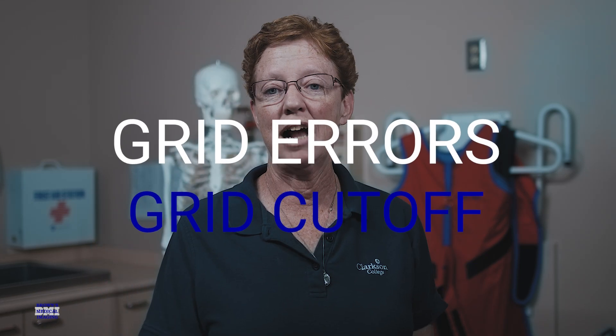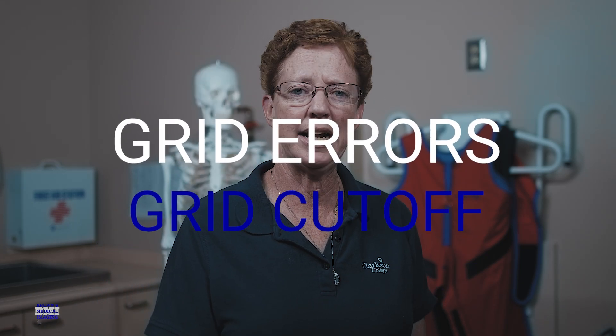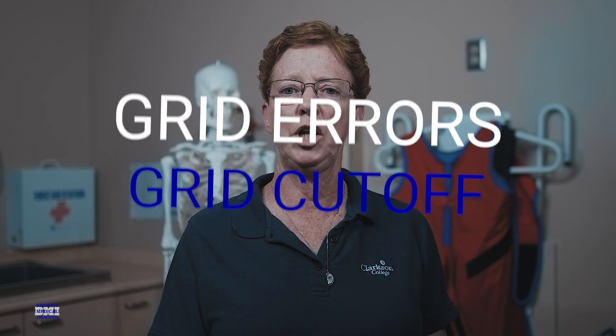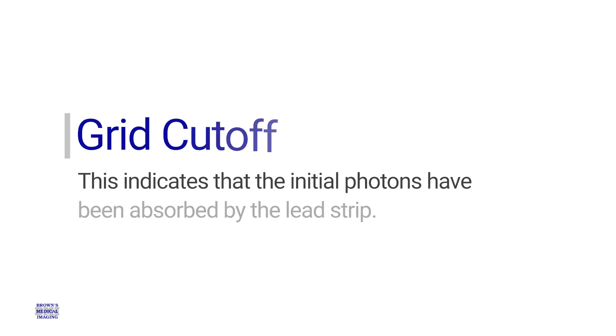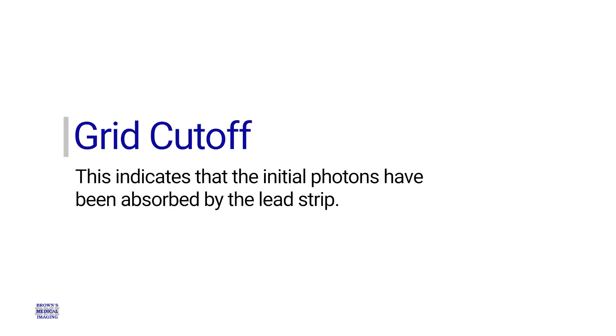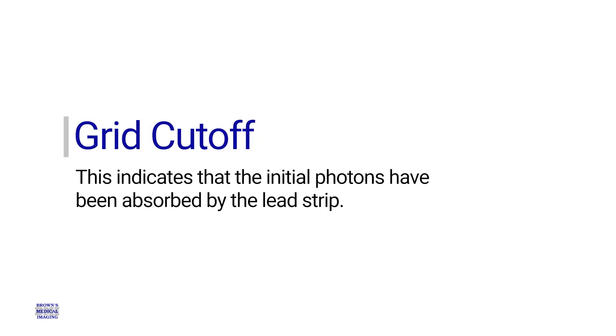Grid errors can be a problem in radiography. When we have a grid error, we have something called grid cutoff. What that means is that the primary x-ray photons have gone right into the lead strips.